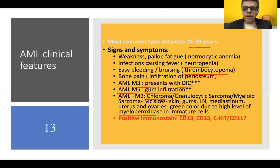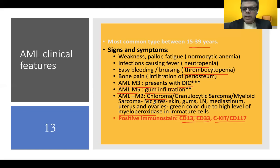Chloroma or granulocytic sarcoma is commonly seen in AML M2. Positive immunostains used to differentiate it from other tumors include myeloid markers CD13, CD33, and CD117. To summarize the key associations: AML M2 with chloroma, AML M3 with DIC, and AML M5 with gum infiltration — these are very important high-yield exam points.